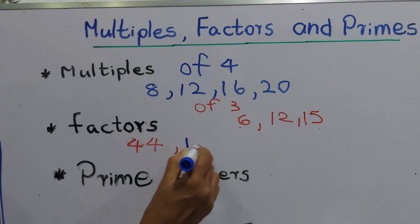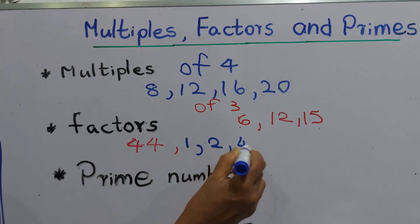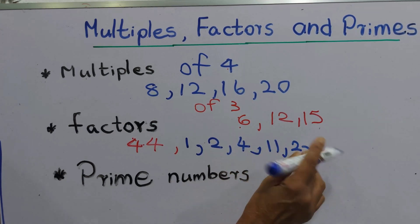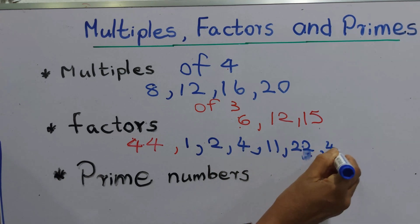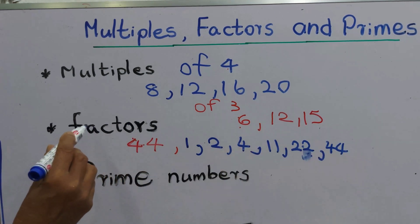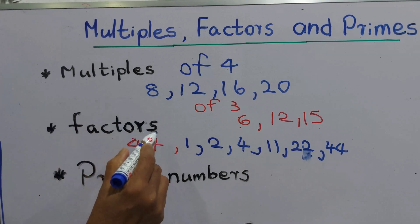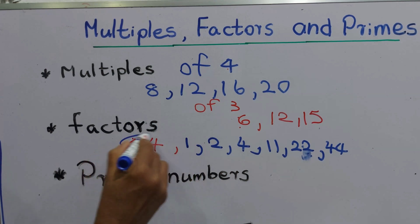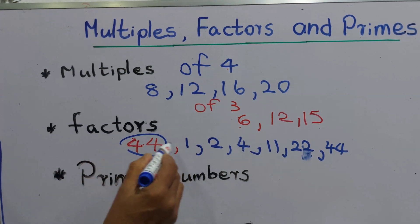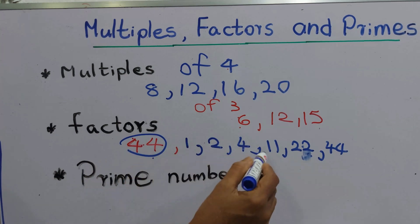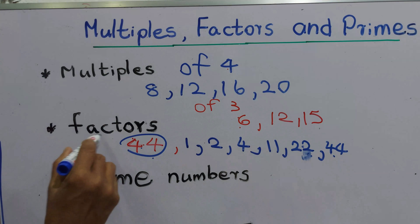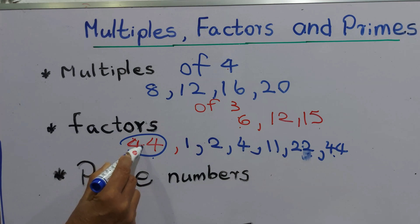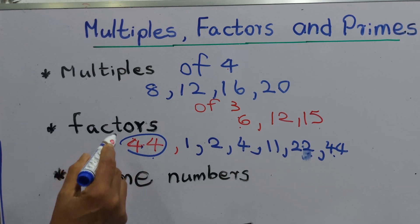A factor divides exactly into a given number. The factors of 44 divide it as: 1, 2, 4, 11, 22, and 44 itself. Now we will take another number to find its factors.